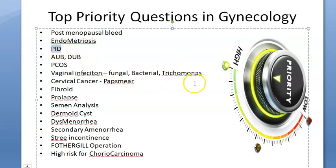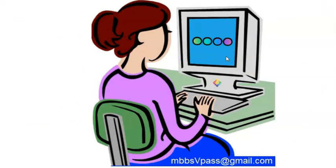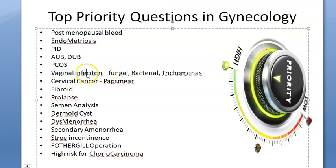Pelvic inflammatory disease and chlamydia - know these. AUB (abnormal uterine bleeding) and DUB (dysfunctional uterine bleeding): know all the terms - menorrhagia, metrorrhagia, oligomenorrhea. PCOS - polycystic ovarian syndrome - is very important: the patient will have excess androgens, hirsutism, and can develop diabetes later due to insulin resistance.